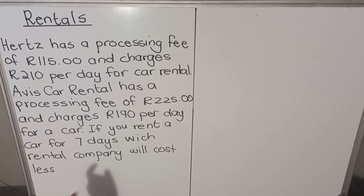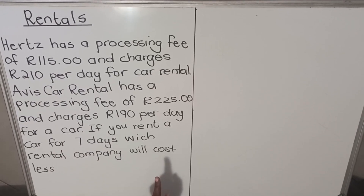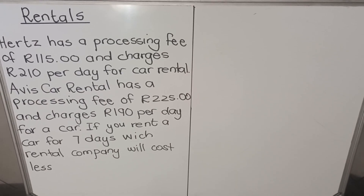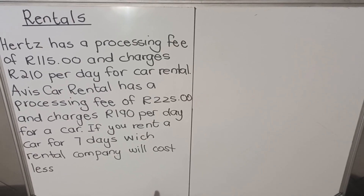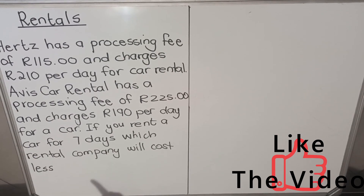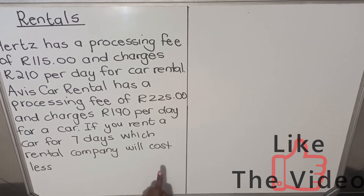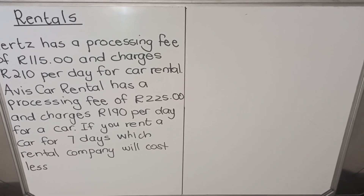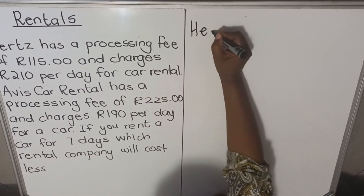The second company, Avis, has a processing fee of 225 and charges 190 per day for a car. The question asks: if you rent a car for seven days, which rental company will cost more, and which will cost less? You need to calculate both and then compare. We start with the first company, Heads.